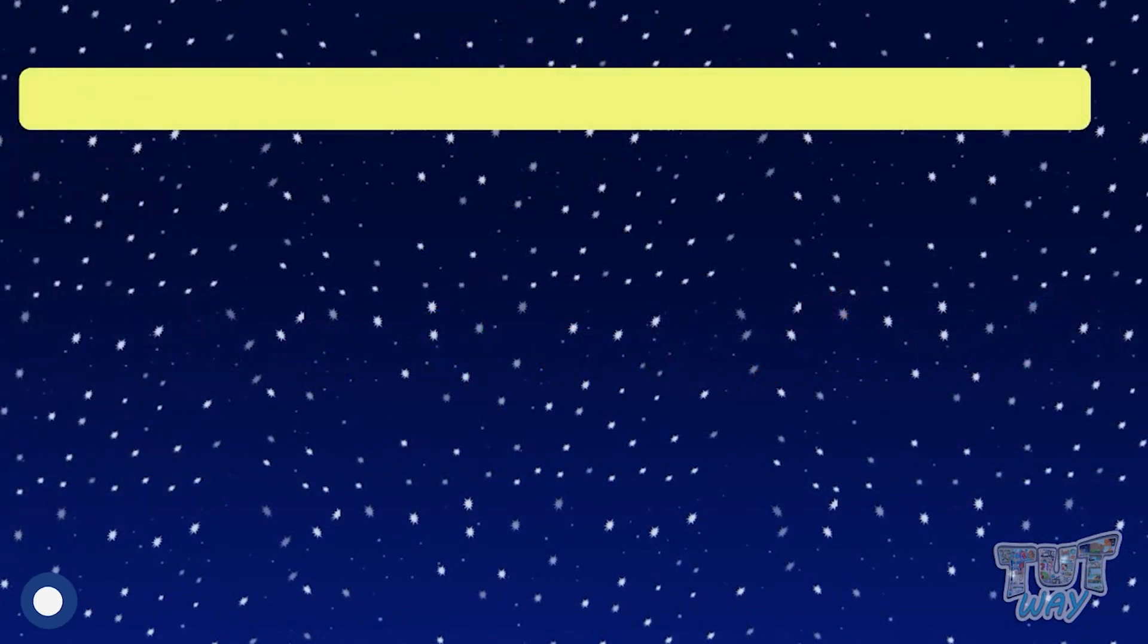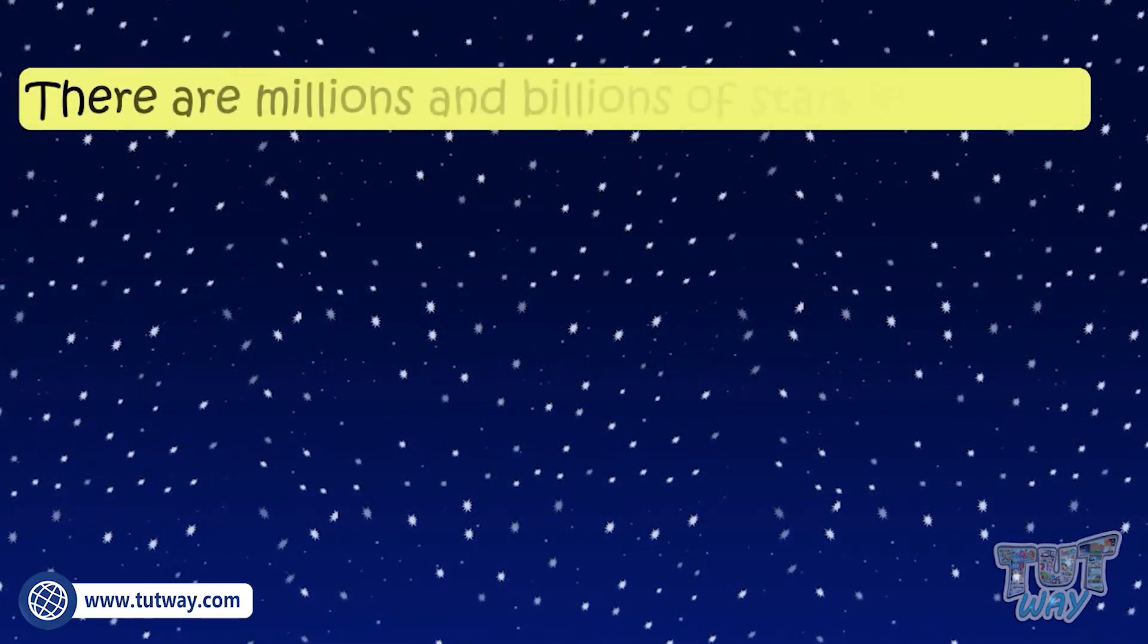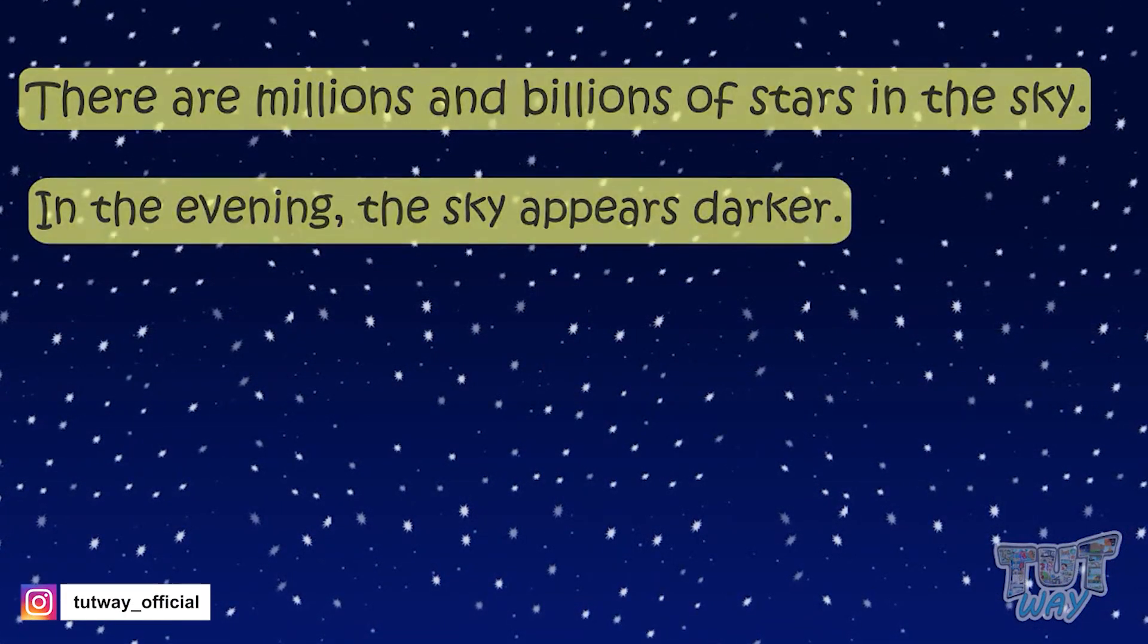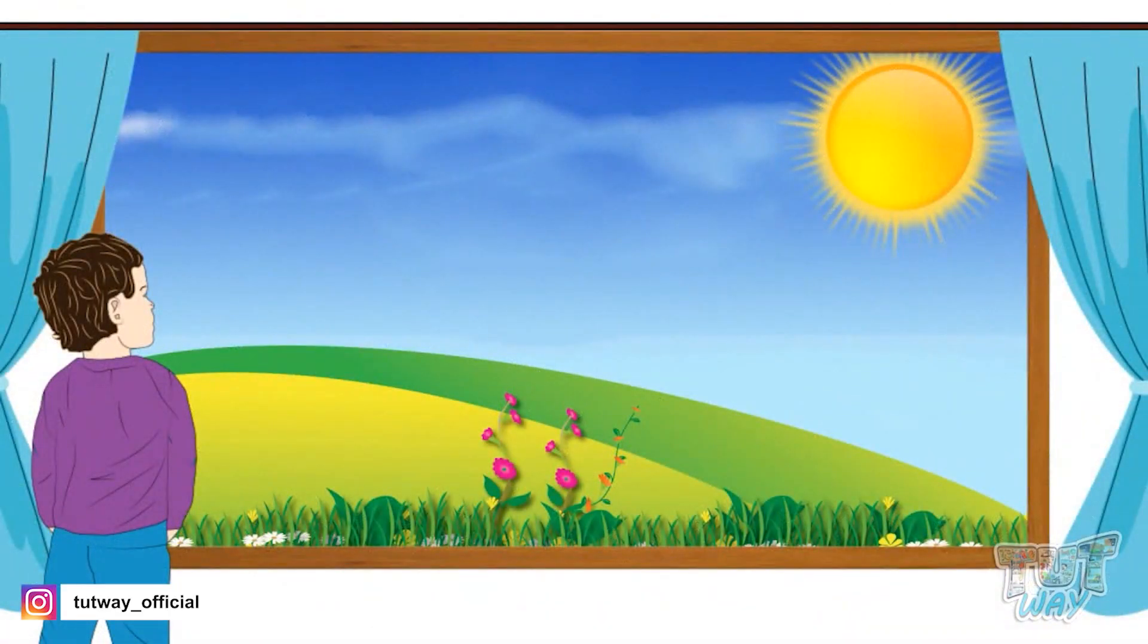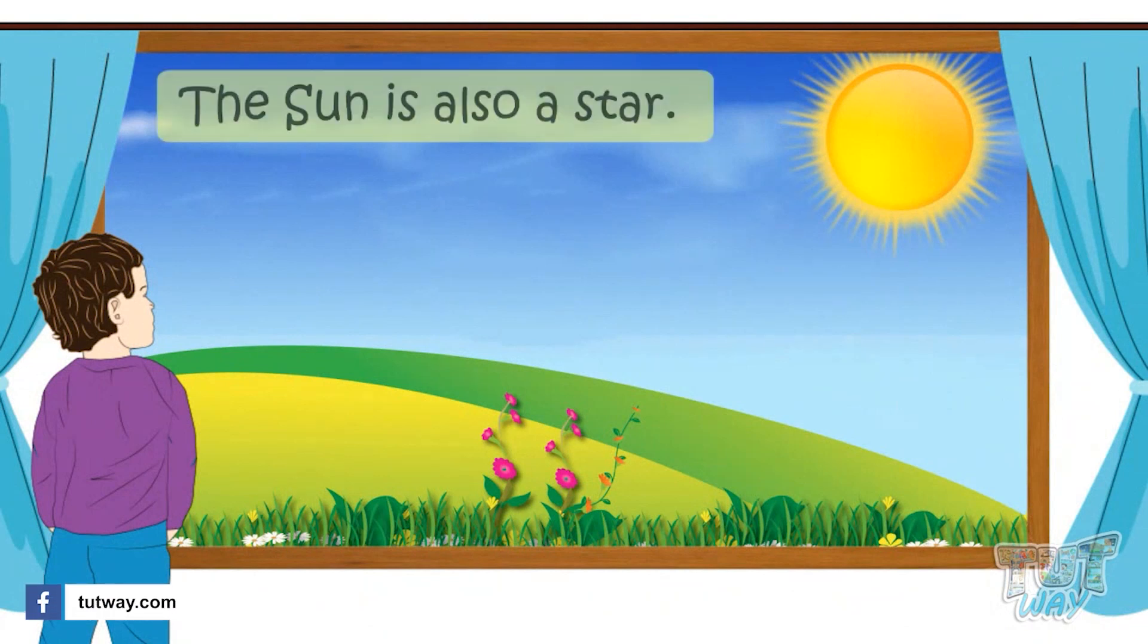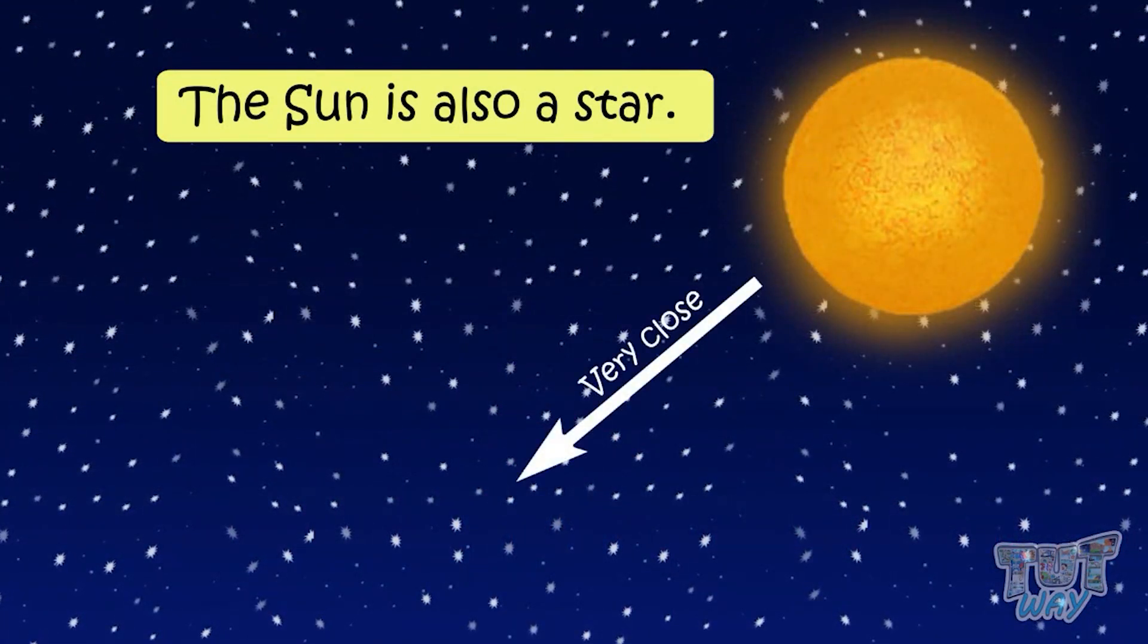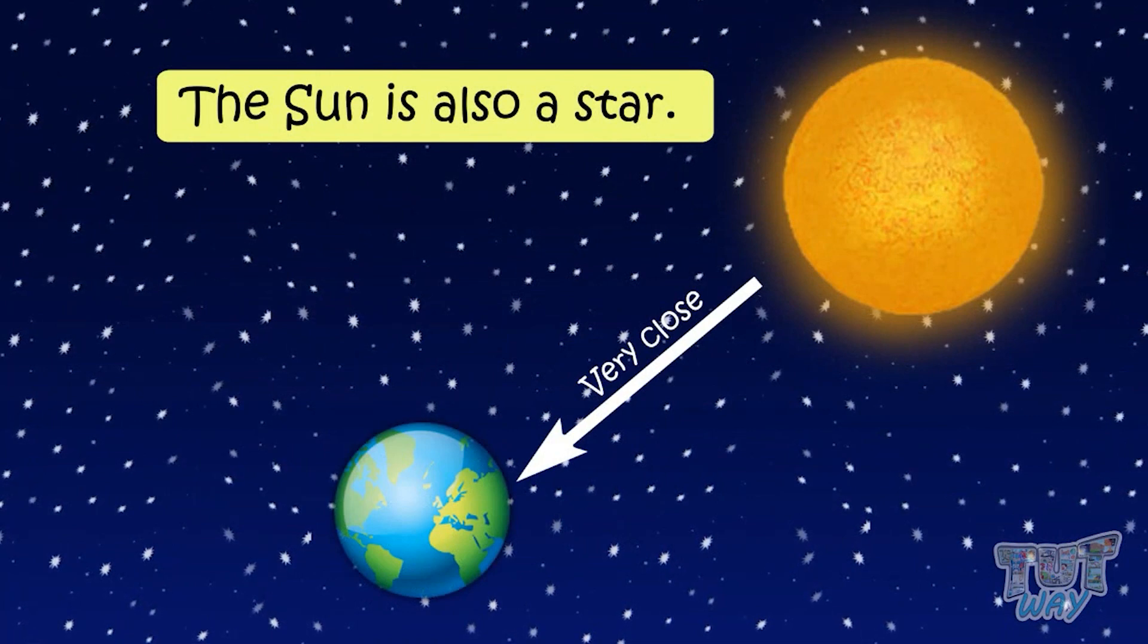There are millions and billions of stars in the sky. We cannot count them. The sun that we see shining bright in the sky is also a star actually, but it appears to be bigger because the sun is very close to our planet Earth as compared to stars.